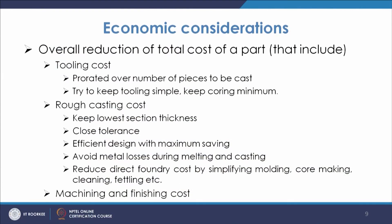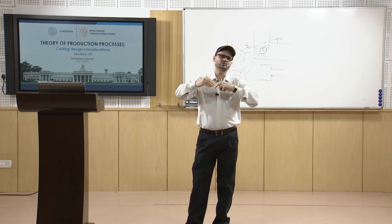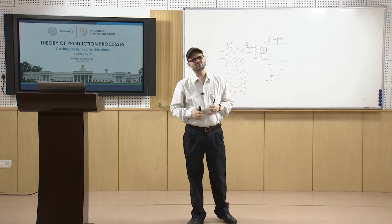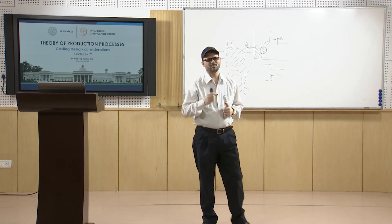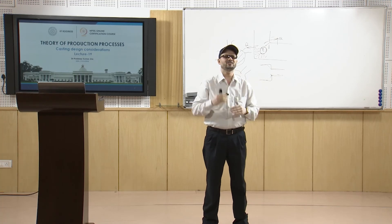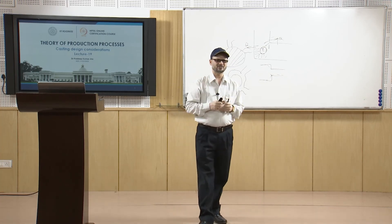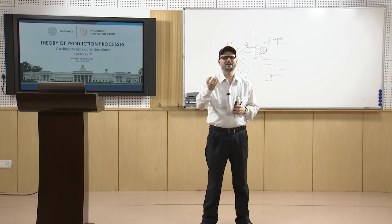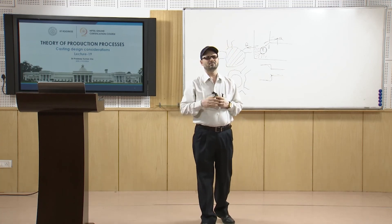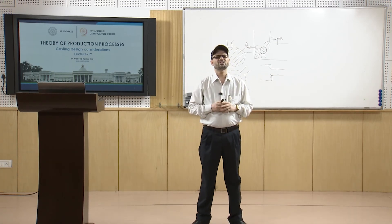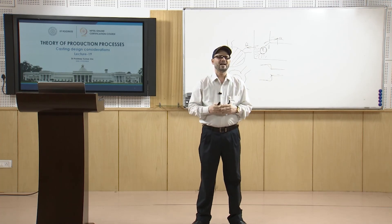For machining and finishing cost, you must provide proper machining allowances so you do not need to remove too much material, minimizing machining and finishing expenses. A small amount of allowance means a small amount of material to be removed to get the desired finish. Similarly, fettling and cleaning should be done at minimum so that yield is also improved. These are the economic considerations which need to be seen so that you get good yield and enhancement in the productivity of the casting. Thank you very much.